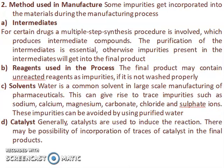Methods used in manufacture: some impurities get incorporated into materials during the manufacturing process. First, intermediates — for certain drugs, a multi-stage synthesis procedure is involved which produces intermediate compounds. The purification of intermediates is essential; otherwise impurities present in them will get into the final product. Reagents used in the process: the final product may contain unreacted reagents as impurities if not washed properly. Solvents: water is a common solvent in large-scale manufacturing of pharmaceuticals. This can give rise to trace impurities such as sodium, calcium, magnesium, carbonate, chloride, and sulphate ions. These impurities can be avoided by using purified water.